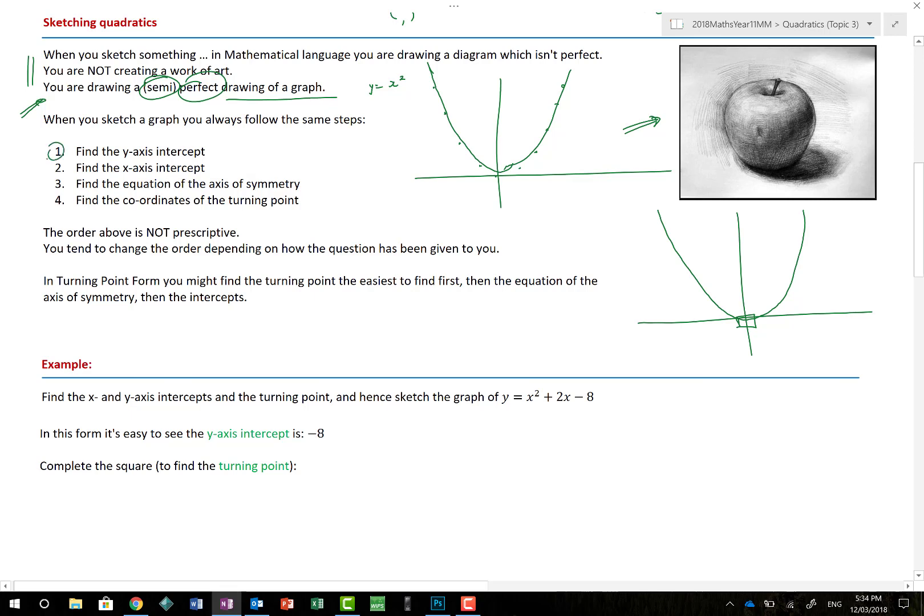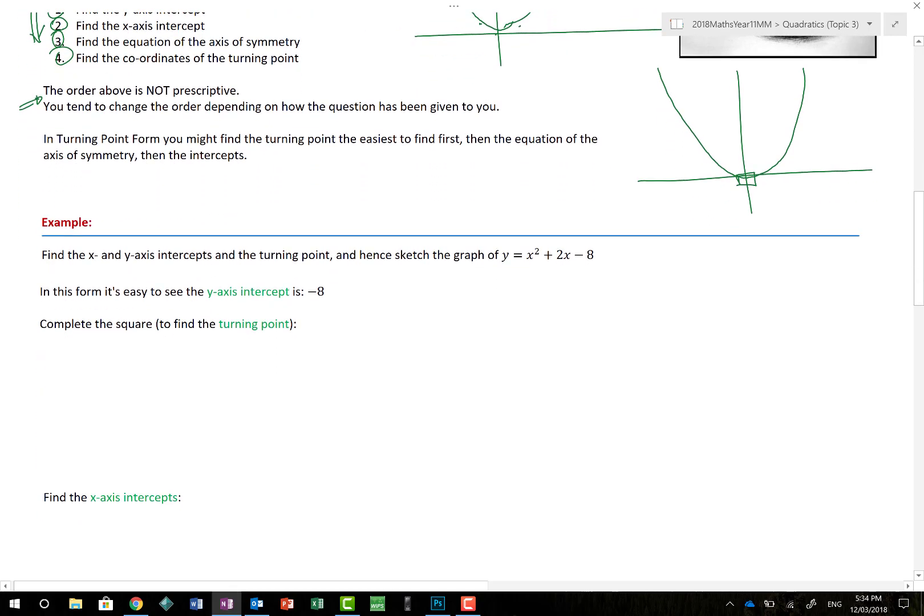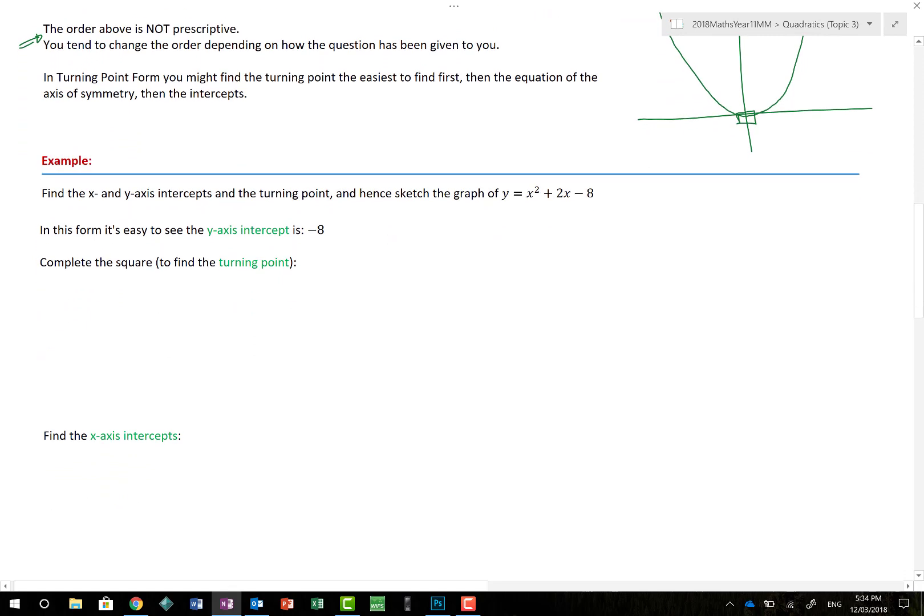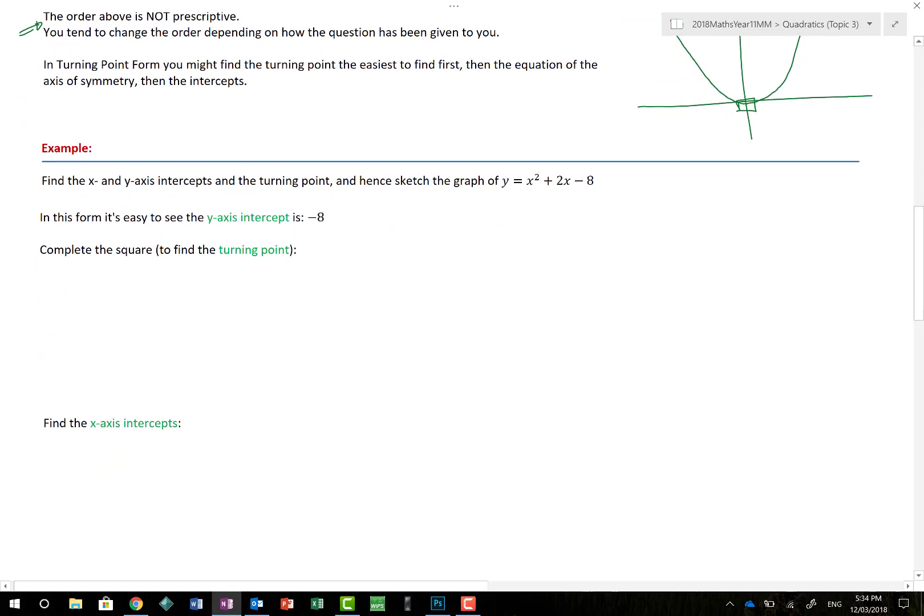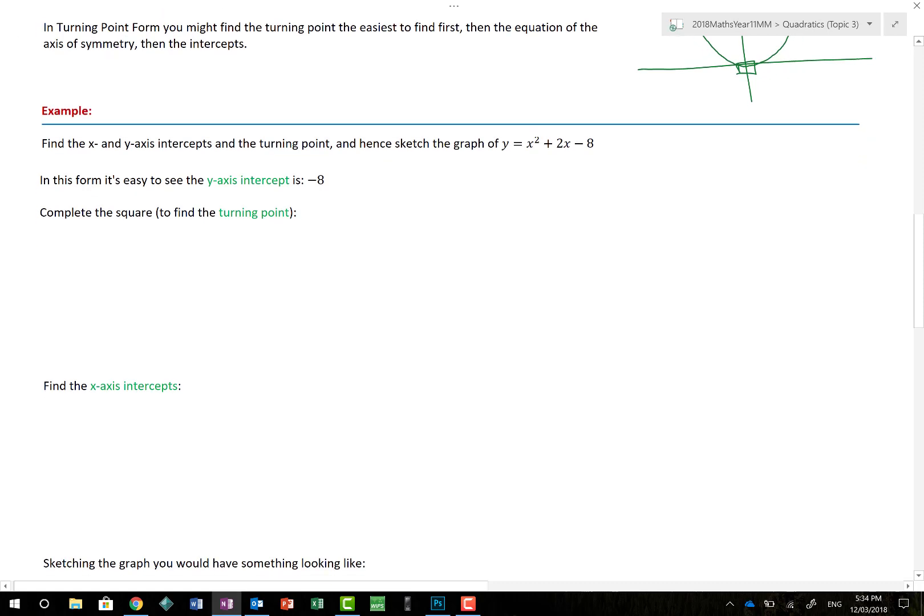When you sketch a graph, you always follow the same steps. Number 1, find the Y axis intercept. 2, find the X axis intercept. 3, find the equation of the axis of symmetry for the equation of any turning points. Now, although I've numbered them 1, 2, 3 and 4, actually, the order isn't prescriptive. So long as you do all of those four steps, you should be able to then draw or sketch your curve.